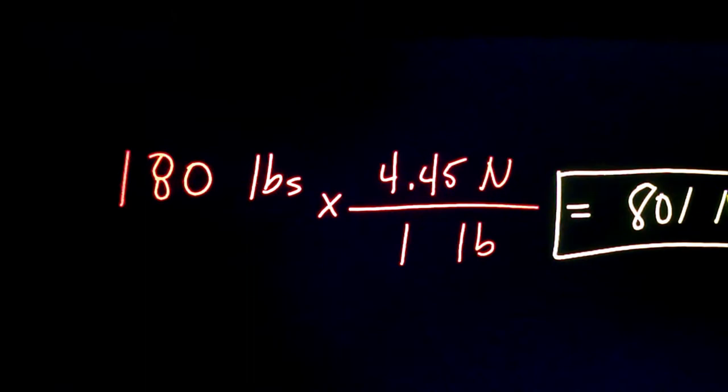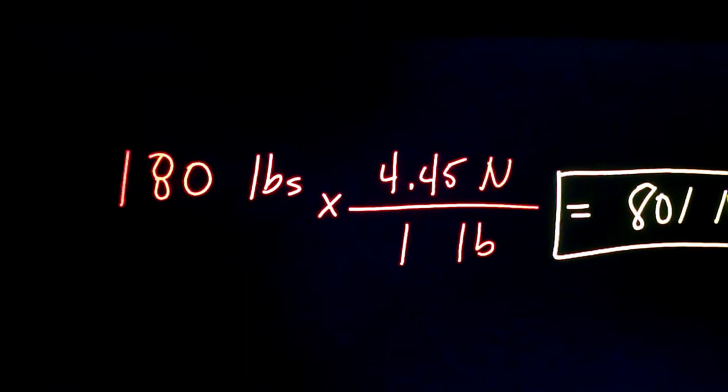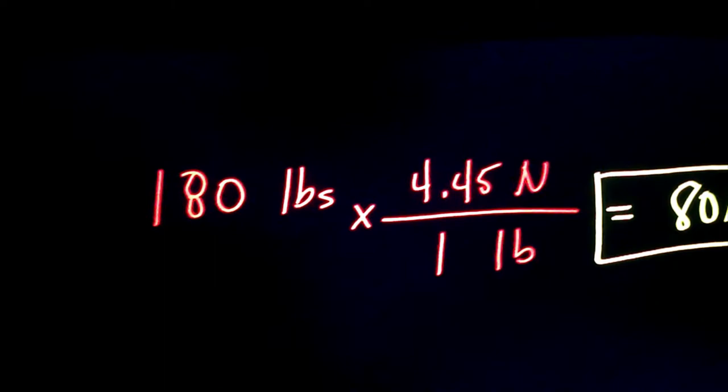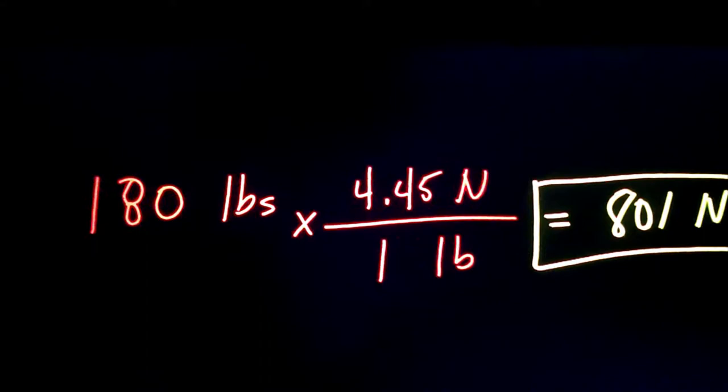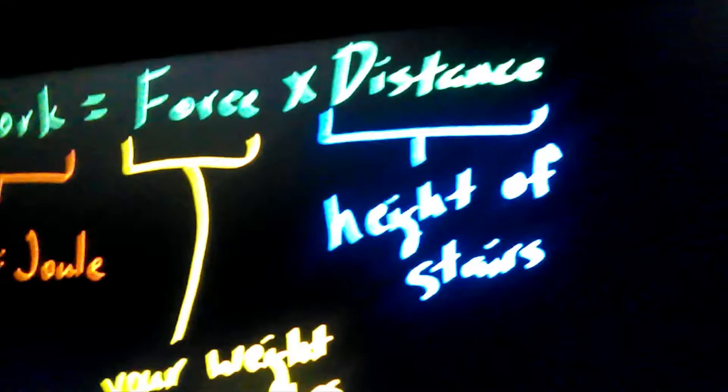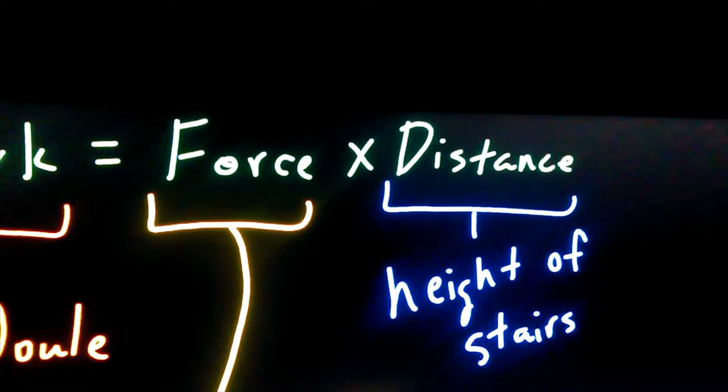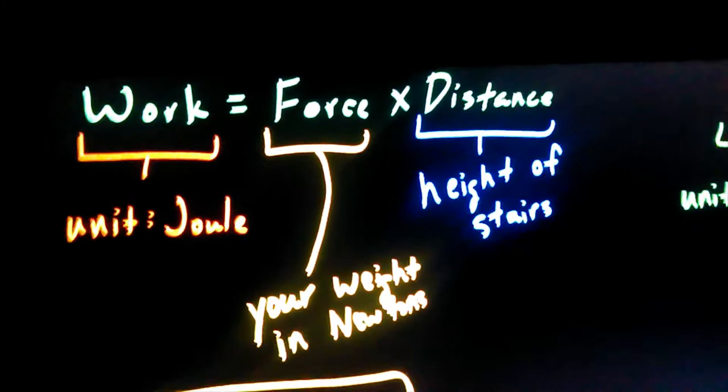Let me show you an example calculation. This is what I want each of you in your lab report to calculate with your own numbers. If I take my 180 pounds that I'm about to move up the stairs and convert that to newtons, I multiply by 4.45 newtons per pound and get 801 newtons. That's the number I would use as my force. I would take that 801 newtons and multiply it times the height of the stairs, and that would give me the work I'm doing each time I climb the stairs.